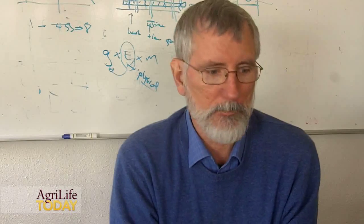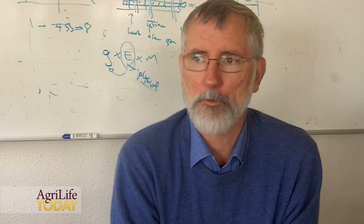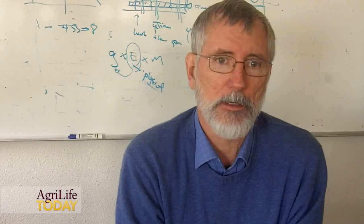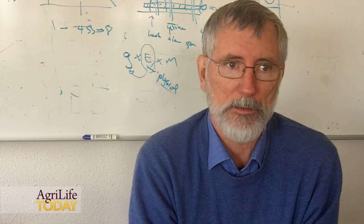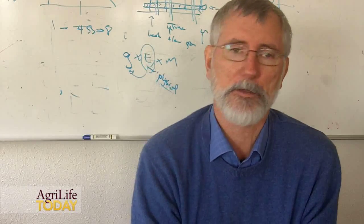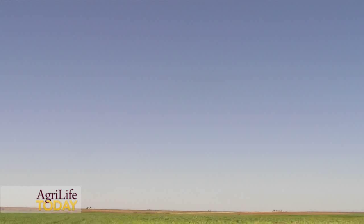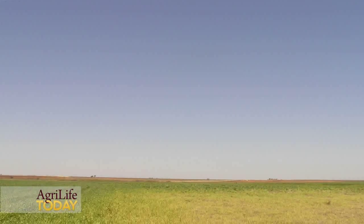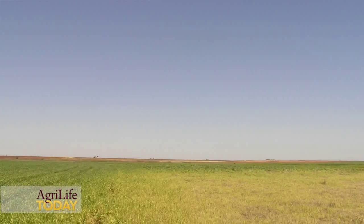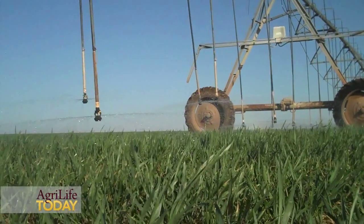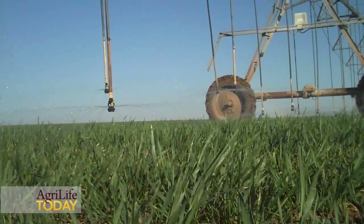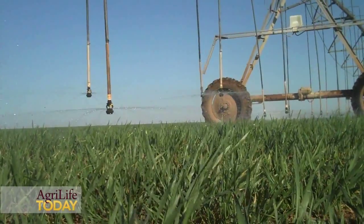One thing we're really excited about is that although aerial images have been taken before and unmanned aircraft have been used to measure things, they've never been used to our knowledge to manage irrigation applications, especially in diseased crops. This is something totally new. In the Texas Panhandle, where water is such a precious resource, anything we can do to reduce wasteful applications — where farmers apply water that won't benefit or pay off for them — is going to be a positive thing.